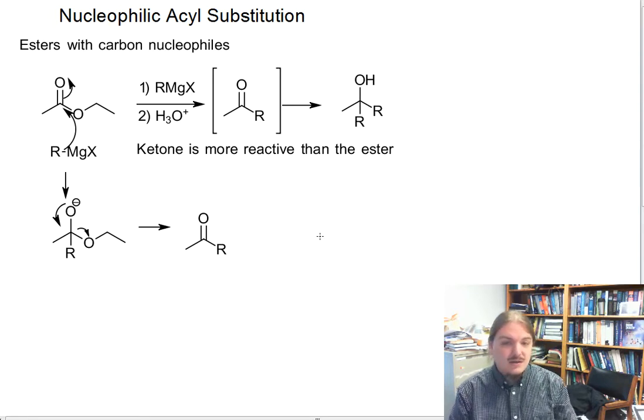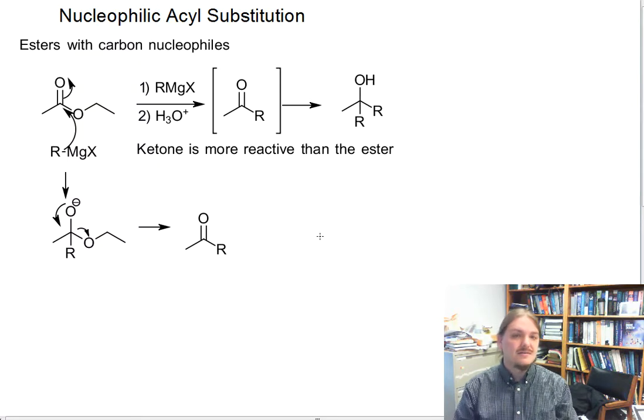Well, the first Grignard reagent molecule will react with the ester to form a ketone. And then the ketone is more reactive. So it'll react with the next. And you'll get like a 50-50 mixture of tertiary alcohol and unreacted ester. It would be weird.